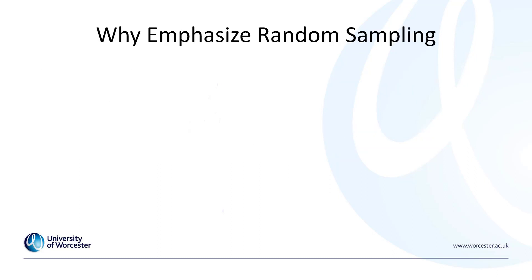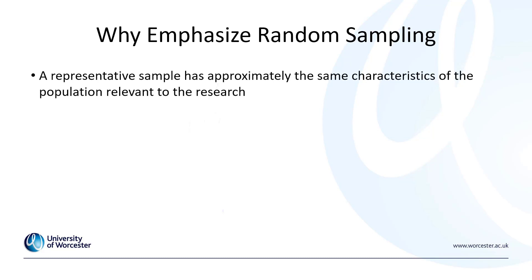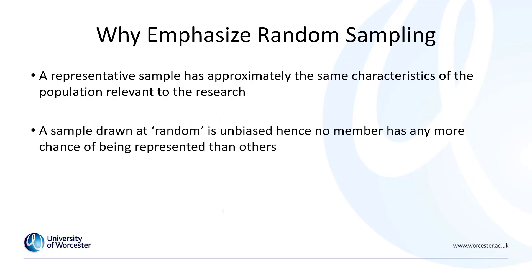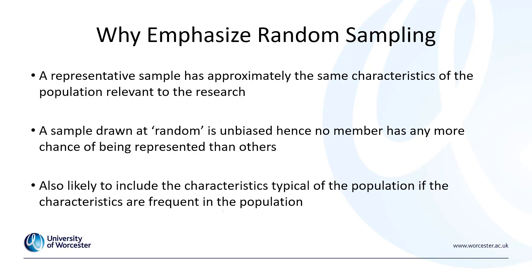So why emphasize random sampling? A representative sample has approximately the same characteristics of the population relevant to the research. A sample drawn at random is unbiased — no member has any more chance of being represented than others. This means the sample is also likely to include the characteristics typical of the population, if those characteristics are frequent in that population. Random sampling should give us a completely random and representative sample.